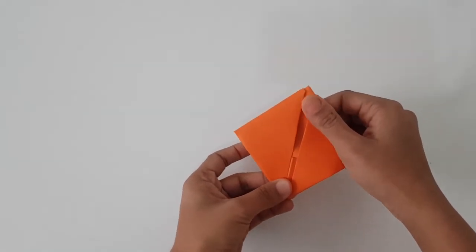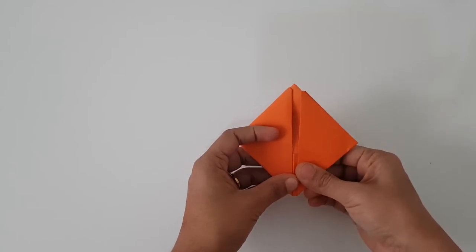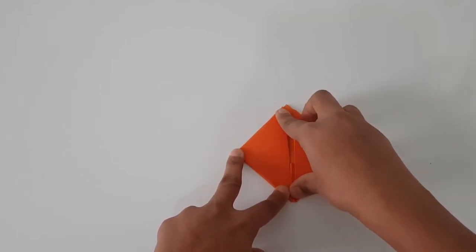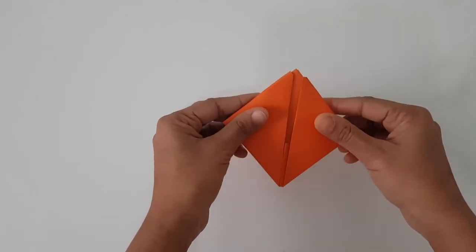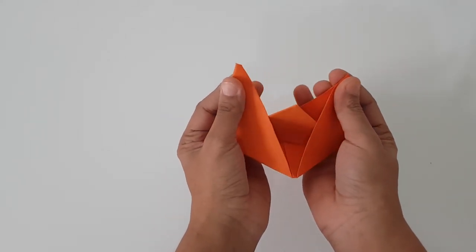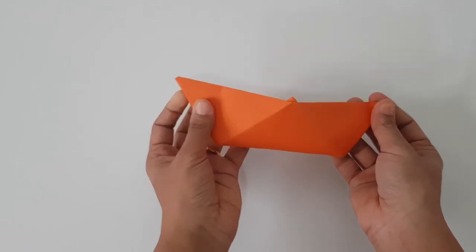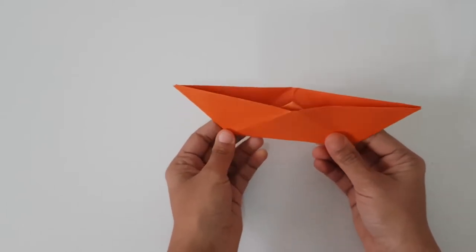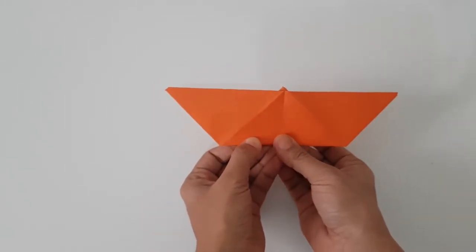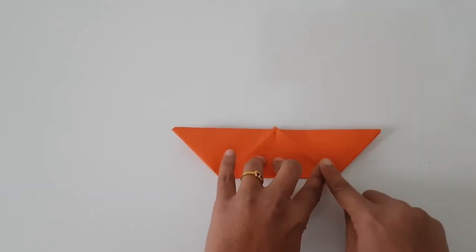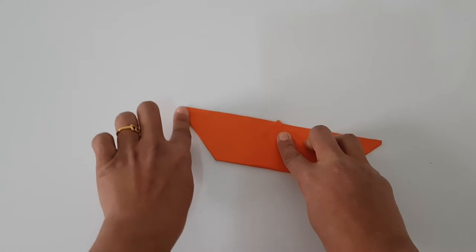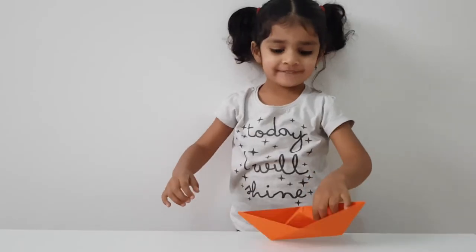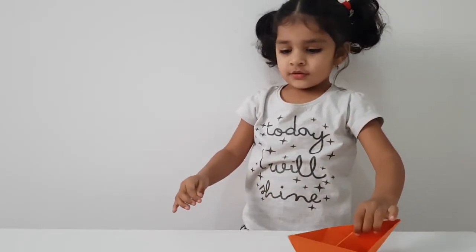And we get something which looks like this. Wow. I've got a little small square. I'm going to press it a little bit here too. And look what's going to turn out with this. Wow. Here we have got our paper boat ready. Yay. Here we have our orange color boat ready. Yay.